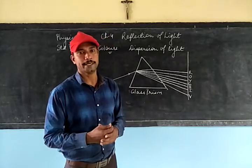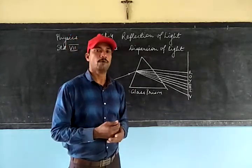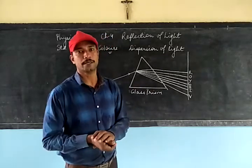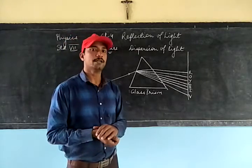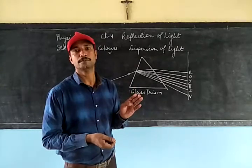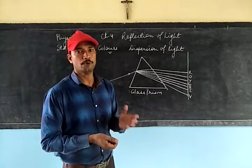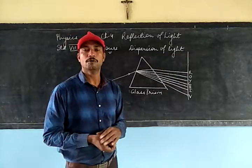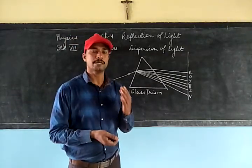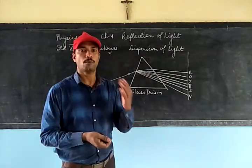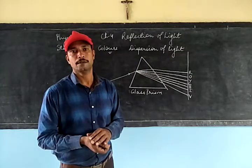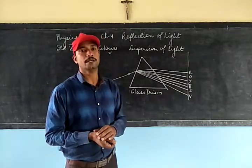You should know that visible light, which looks white in color, is actually a mixture of seven different colors. The seven colors that white light consists of are violet, indigo, blue, green, yellow, orange, and red. We cannot see these seven colors in white light because they are mixed together, but we can split them.